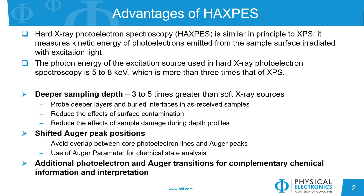First, the information depth of these techniques is related to the inelastic mean-free path of the photoelectrons, and so for HAXPES, we can detect electrons from deeper in the sample — up to 3–5 times greater than traditional XPS. This extends the thickness range of films or interfaces that can be analyzed, reduces the effect of surface contamination in our analysis, and reduces the effect of sample damage during sputter depth profiles.